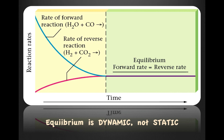Equilibrium is dynamic, not static. What does that mean? That means something is happening, even though it may not be visible to us. At equilibrium, you have a forward reaction occurring and a reverse reaction occurring, and they're occurring at the same rate. But when equilibrium is established, no more changes are observable.